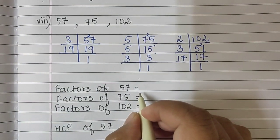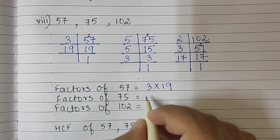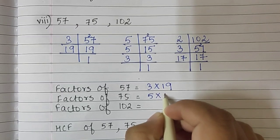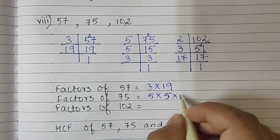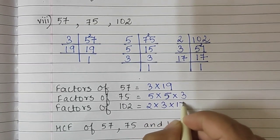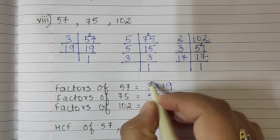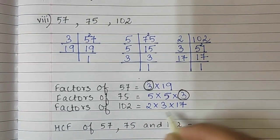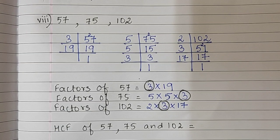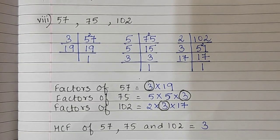So the factors of 57 are 3 into 19. Factors of 75 are 5 into 5 into 3. And factors of 102 are 2 into 3 into 17. It is very easy to find what is common in all three — that is the number 3. So the HCF of 57, 75, and 102 is the number 3.